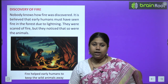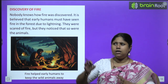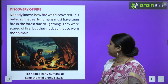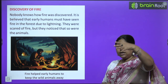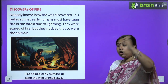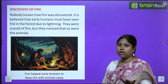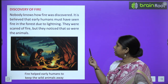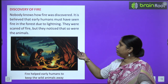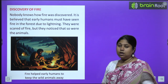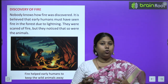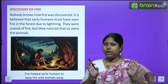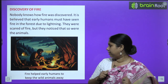It is believed that early humans may have once seen a forest fire — jungle mein aag laggi hui — perhaps caused by lightning. Bijli kadakne ki wajay se kai baar aag lag jaati hai jungle mein. They were scared of fire, but they noticed that so were the animals. Animals bhi aag se bahut zyada darte hain. So they realized fire could keep wild animals away from them.